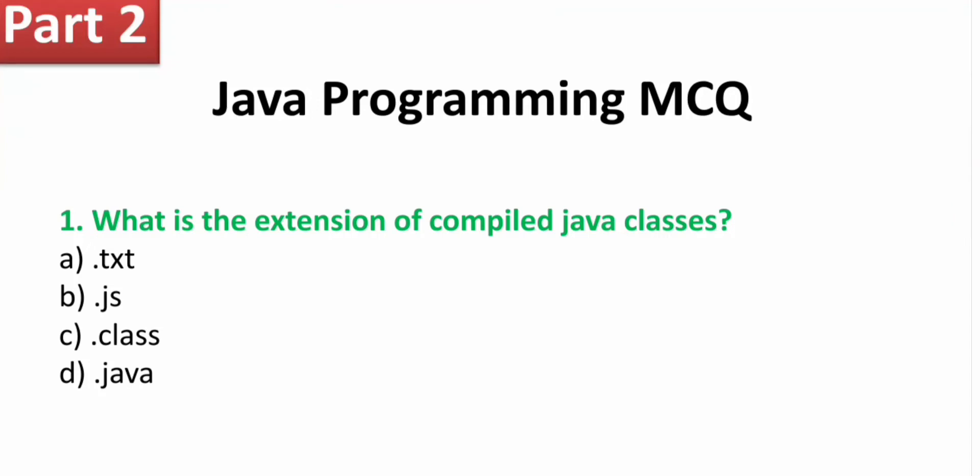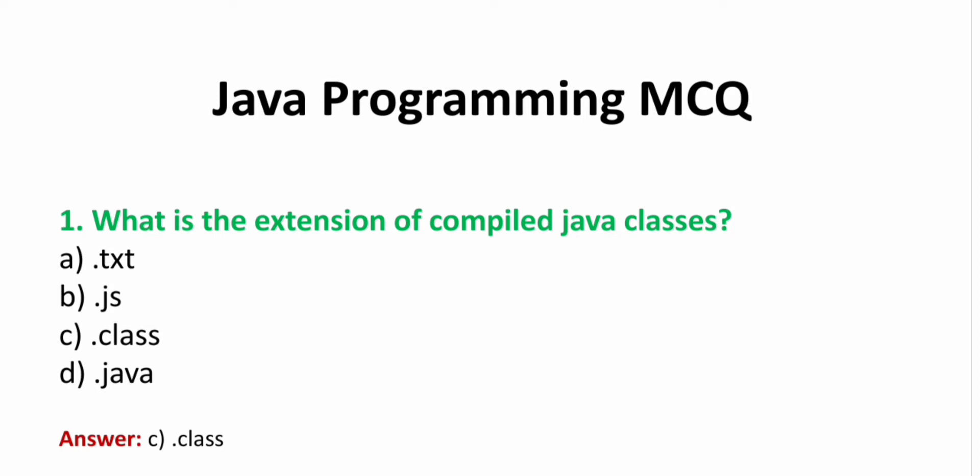Java Programming MCQ. First, which is the extension of compiled Java classes? A. txt  B. js  C. class  D. java. Answer: C. class. The compiled Java files have .class extension.